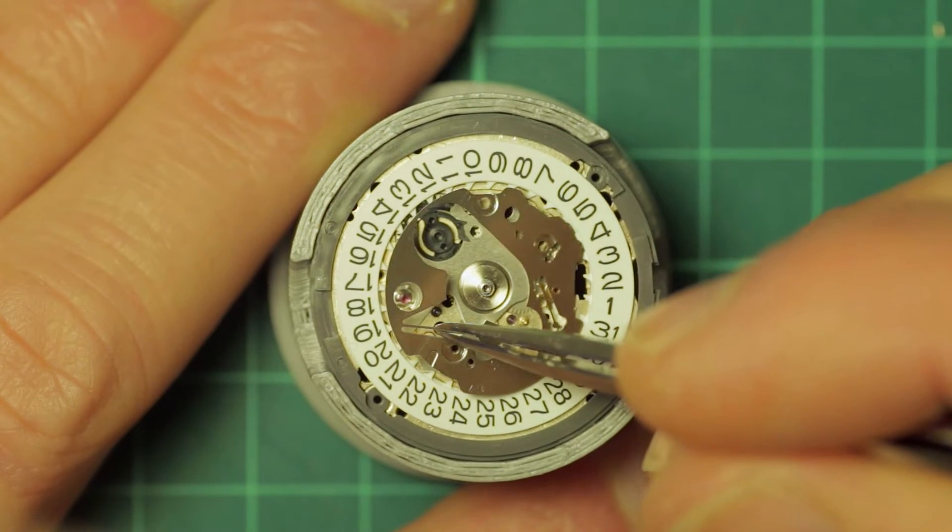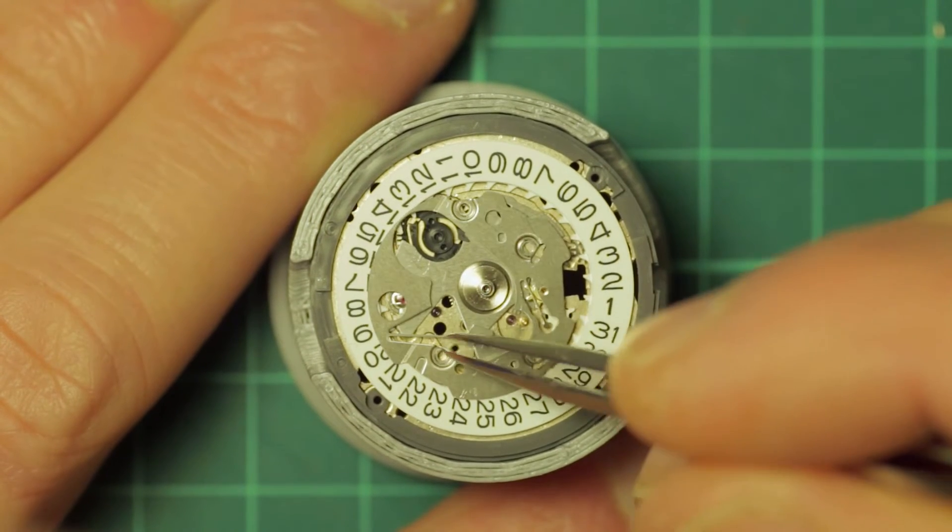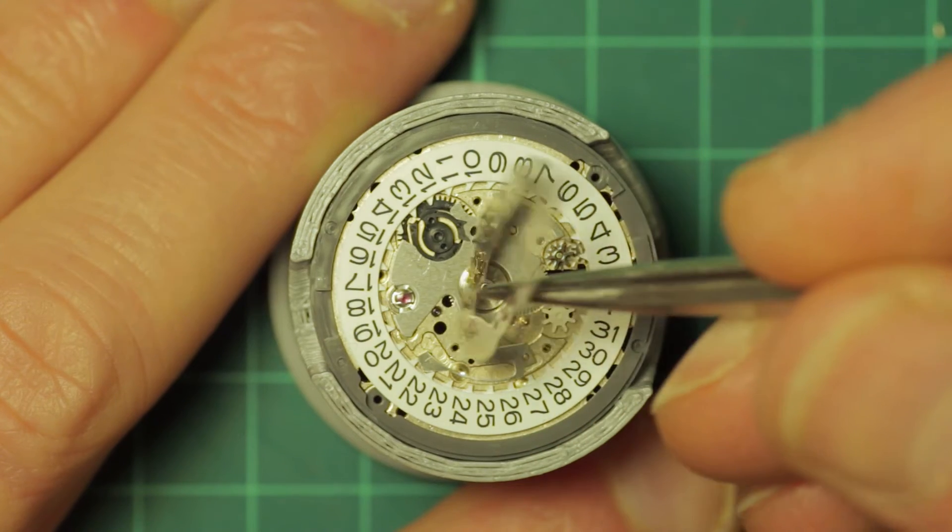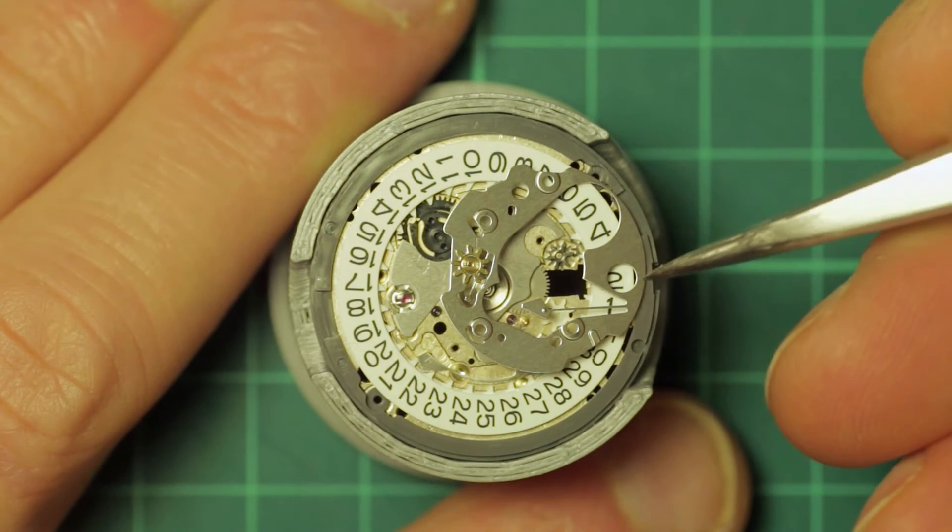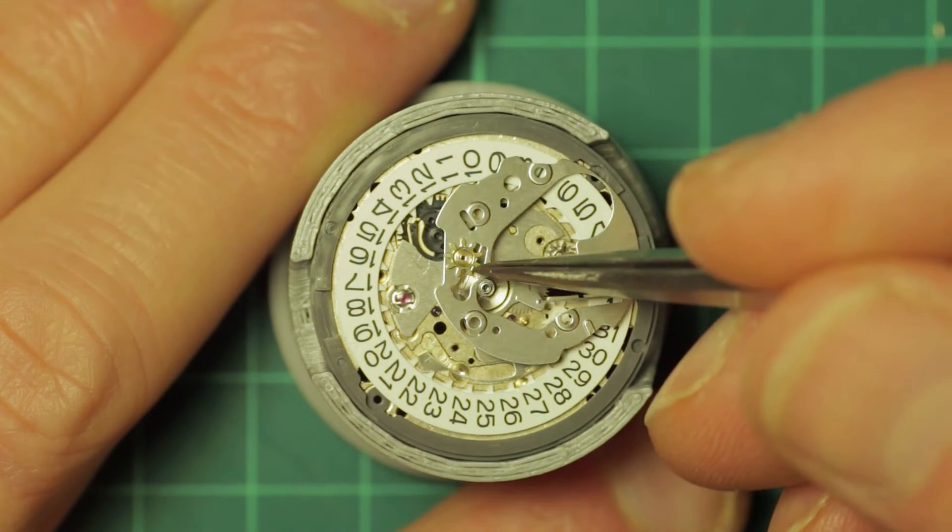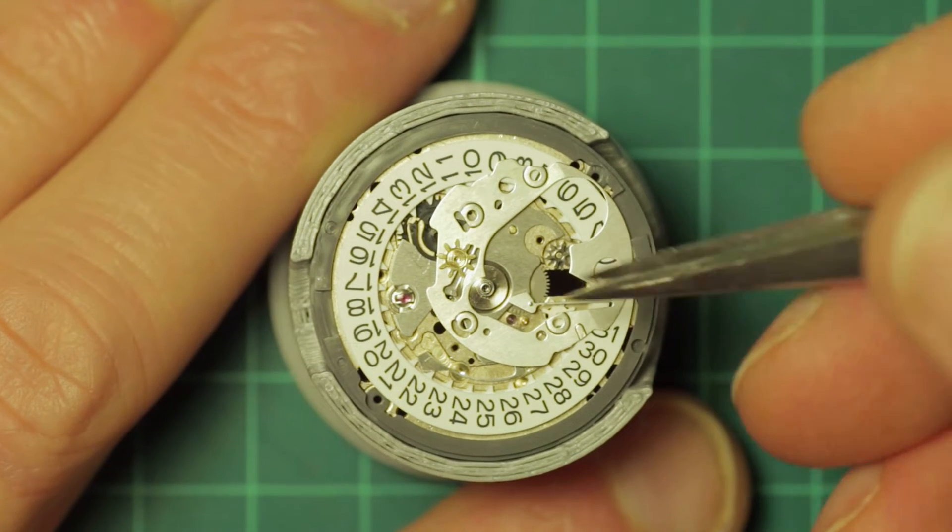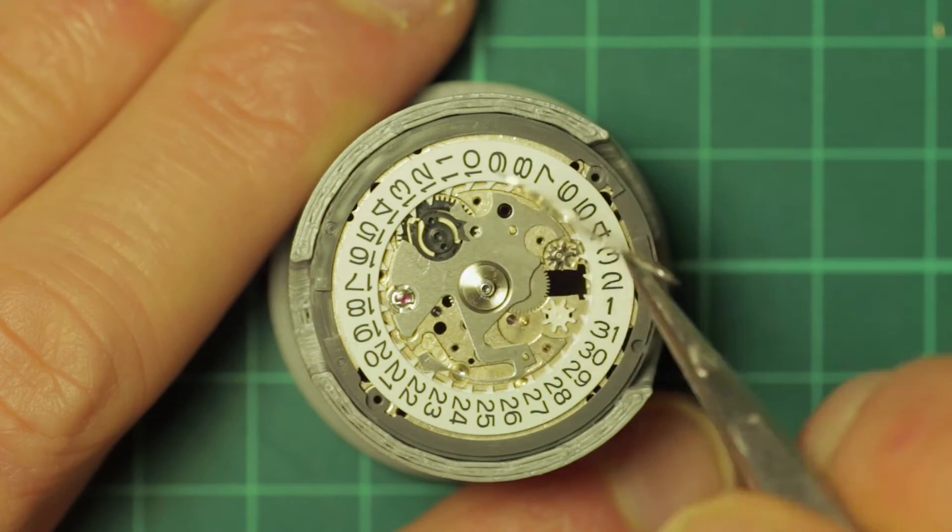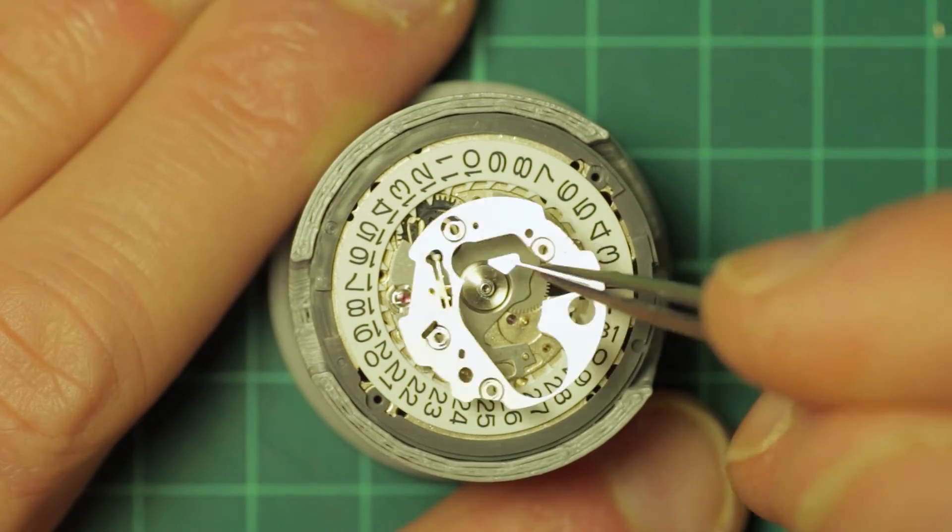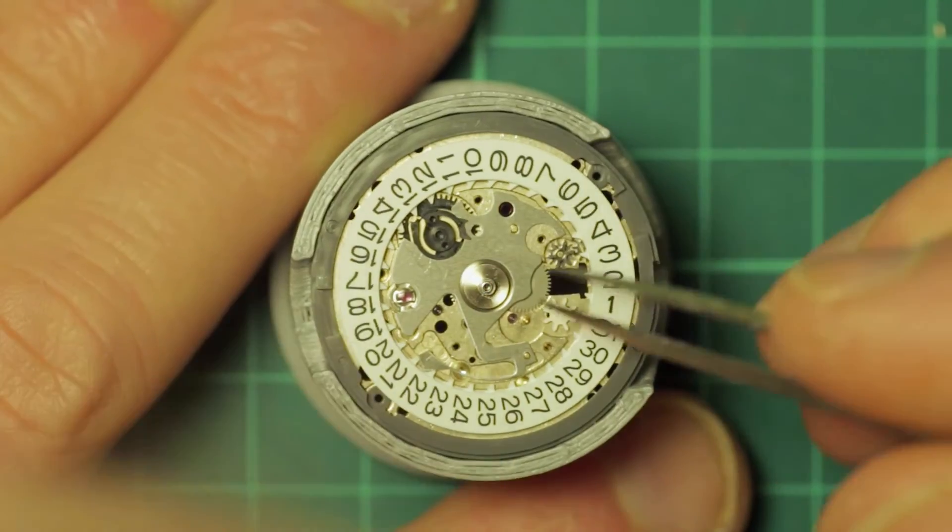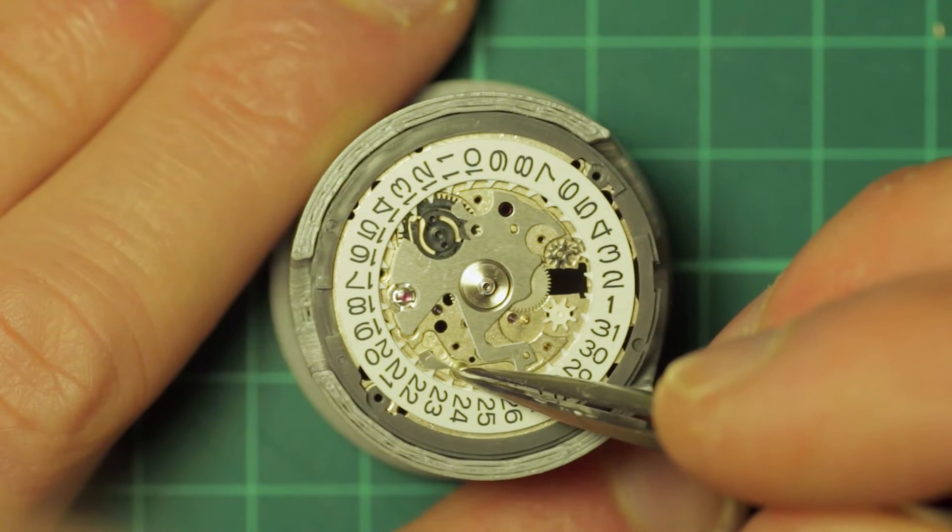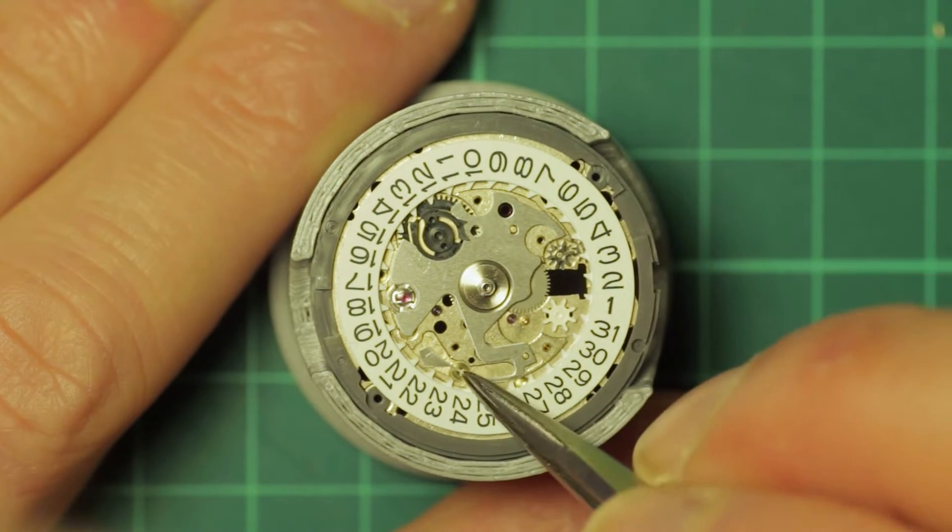And with the four screws removed it simply lifts away. Attached to this plate is a riveted brass gear, and this along with the plastic gear actuates the rapid day change mechanism. And the part that I'm holding there with my tweezers would be the day change jumper.